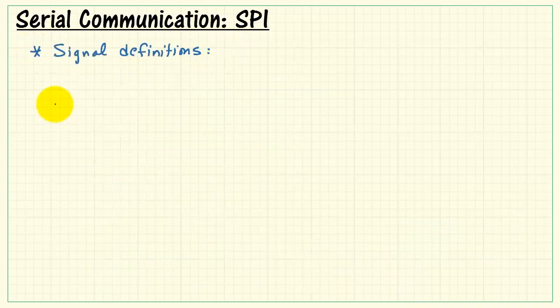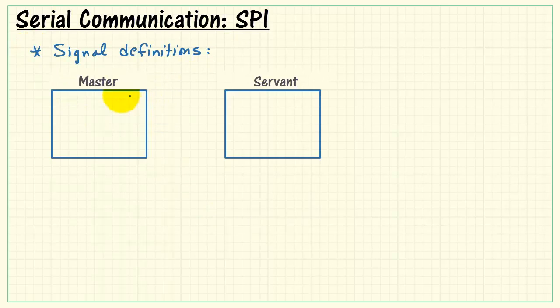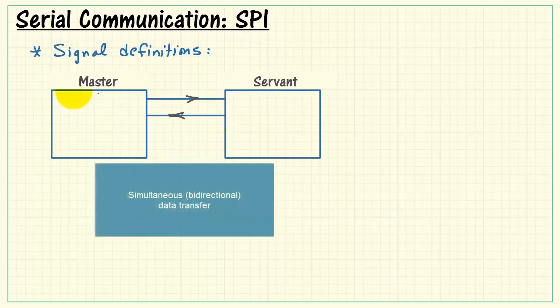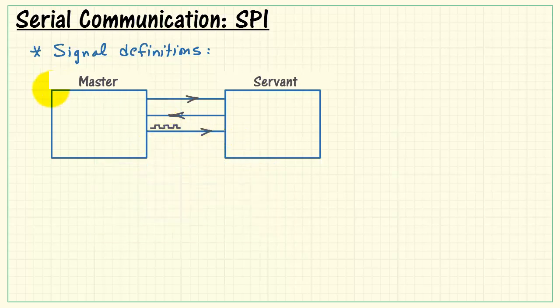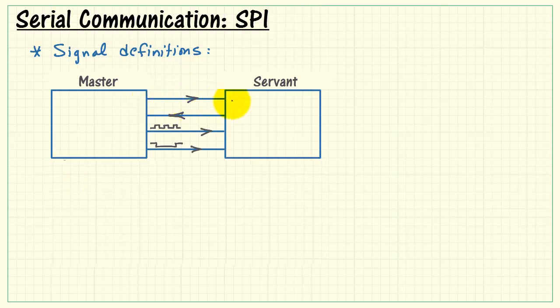Now let's take a look at signal definitions and terminology for SPI. We have one device designated as the master, and a second designated as the servant. We have two data transfer lines. This allows simultaneous bidirectional data transfer. We have a third line that carries the bit clock that synchronizes the data transfer from master to servant. And finally we have an active low chip select line.